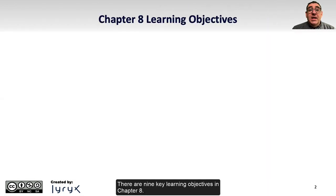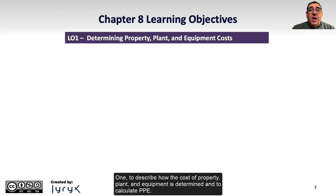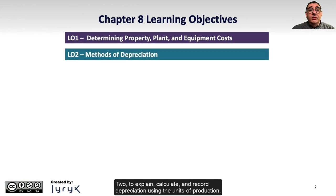There are nine key learning objectives in Chapter 8. Learning Objective 1 is to describe how the cost of property, plant, and equipment is determined and to calculate PPE. Learning Objective 2 is to explain, calculate, and record depreciation using the units of production, straight line, and double declining balance methods.